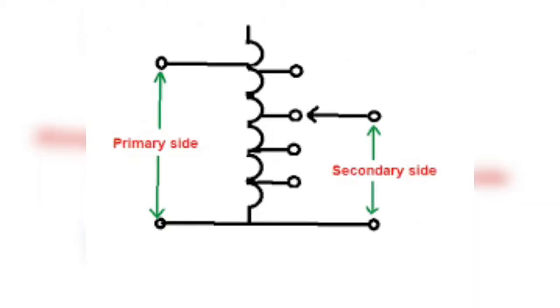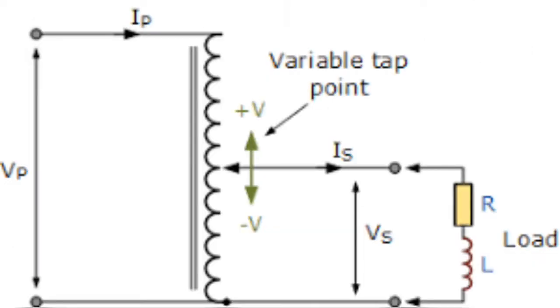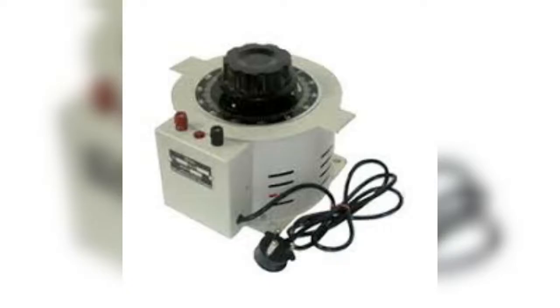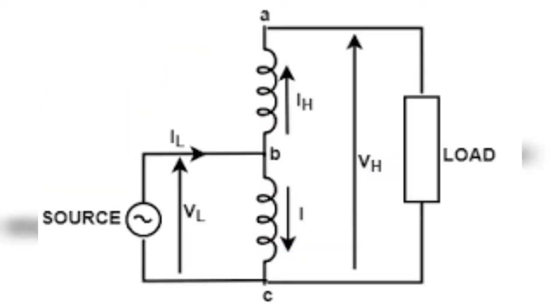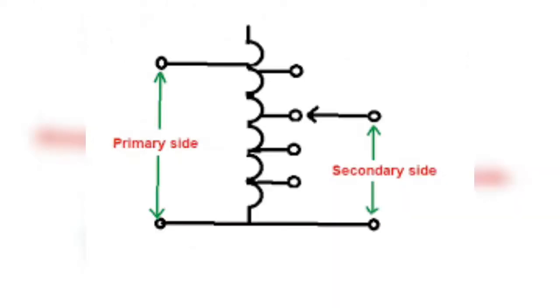Suppose we have a single phase 200 volt by 100 volt, 50 Hertz, 10 kVA two winding transformer with polarity markings. Then the coils can be connected in various ways to achieve voltage ratios other than two, as shown in the figures.